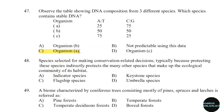48th question: Species selected for making conservation-related decisions, typically because protecting these species indirectly protects many other species that make up the ecological community of its habitat. Correct answer: Option D — Umbrella species.